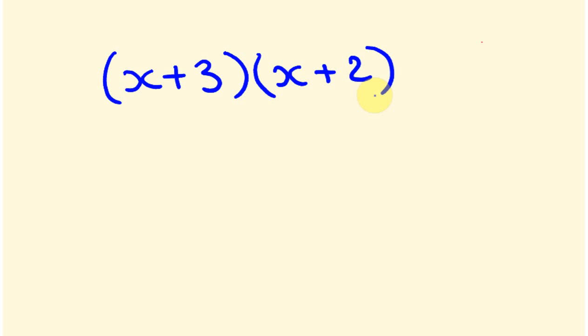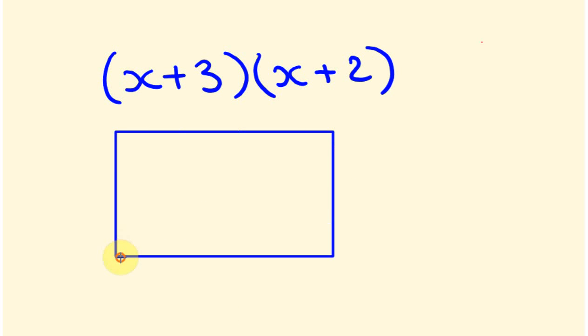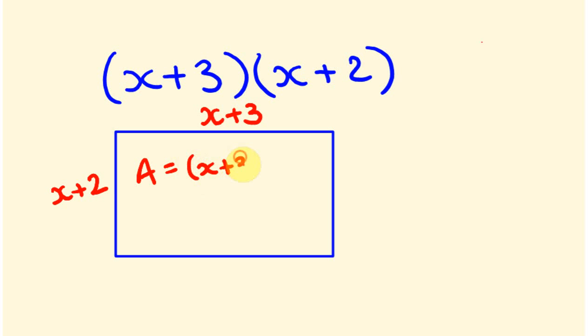Let's start with an example. Say we have a rectangle, and it has two sides: this side here which is x plus 3 and this side here which is x plus 2. If you want to work out the area, you'd realize the area equals (x plus 3) times (x plus 2), and we want to expand these out and make it a little bit more simple.